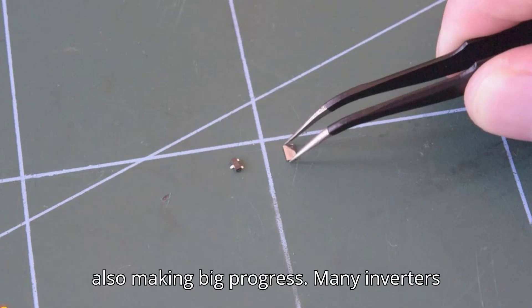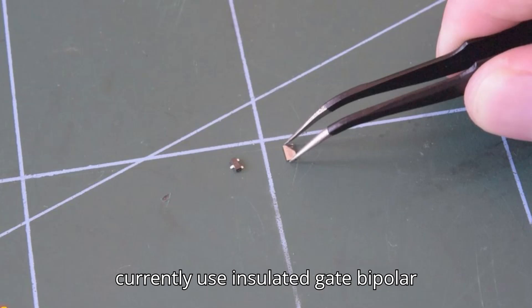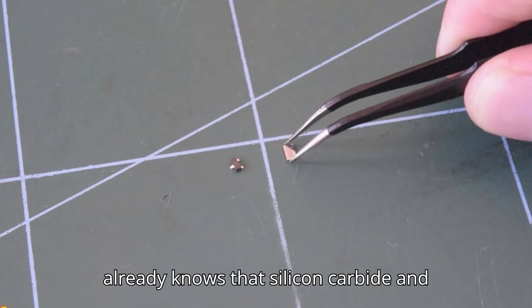Power electronics are also making big progress. Many inverters currently use insulated-gate bipolar transistors, commonly referred to as IGBTs. They work, but the industry already knows that silicon carbide and gallium nitride are the future for electric vehicles large and small.